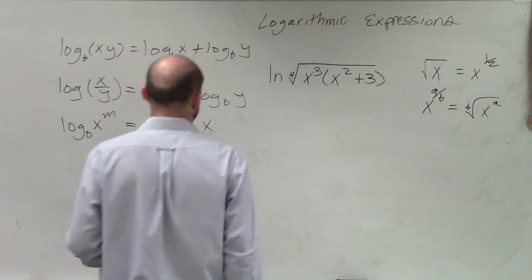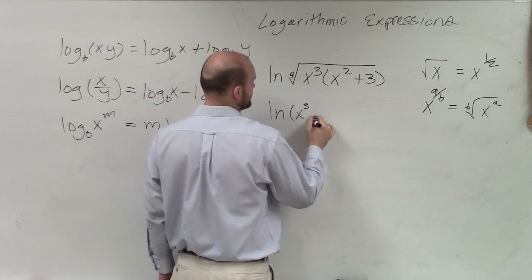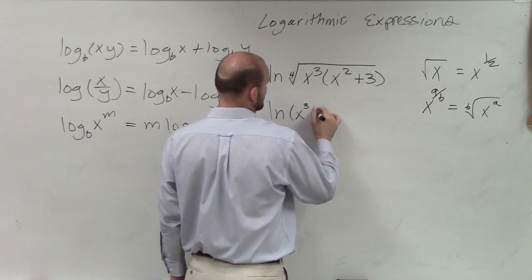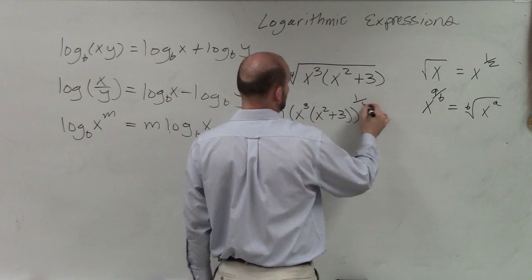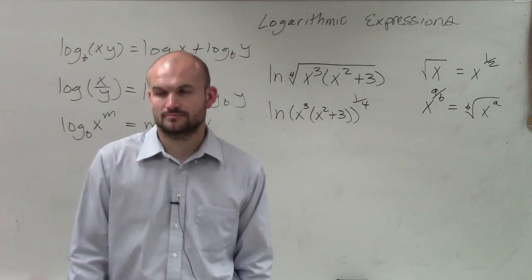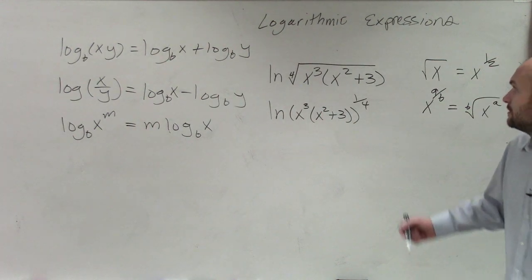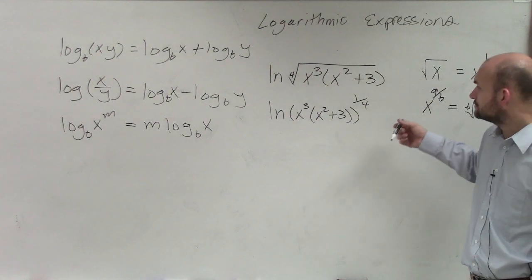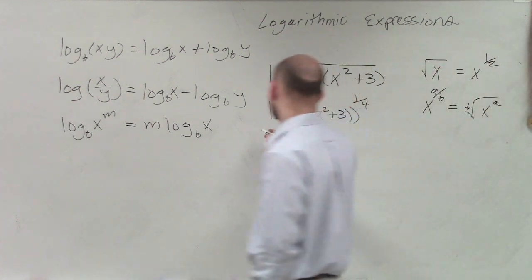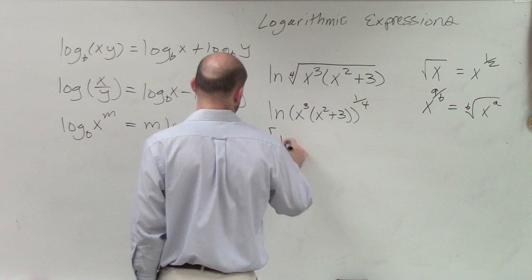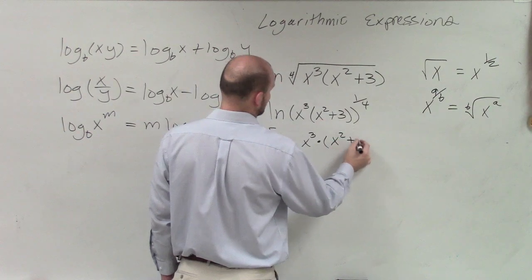So if I have the fourth root, that means I can rewrite this as ln of x cubed times (x squared plus 3) raised to the 1/4 power. Then my rule says that if I have these raised to the power, I can now break this down. So I can break this down into 1/4 times ln of x cubed times (x squared plus 3).